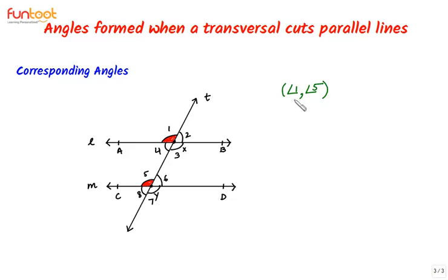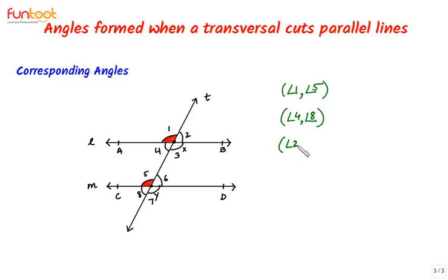We can have four pairs of corresponding angles. The first pair is angles 1 and 5, the second pair is angles 4 and 8, the third pair is angles 2 and 6, and the fourth pair is angles 3 and 7.